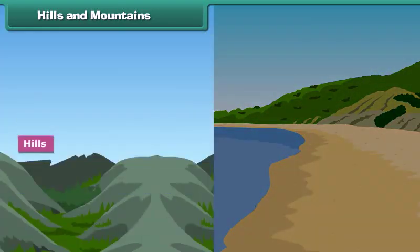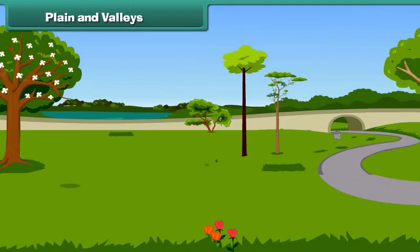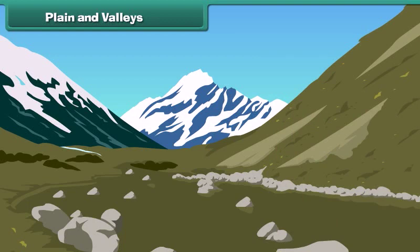Friends, hills and mountains are naturally raised parts of the Earth's surface. But look here carefully — you will notice that a hill is smaller than a mountain. An open field or land with an even surface is known as a plain. A valley is the land mass between two hills or mountains. A valley may be flat, V-shaped or even U-shaped.